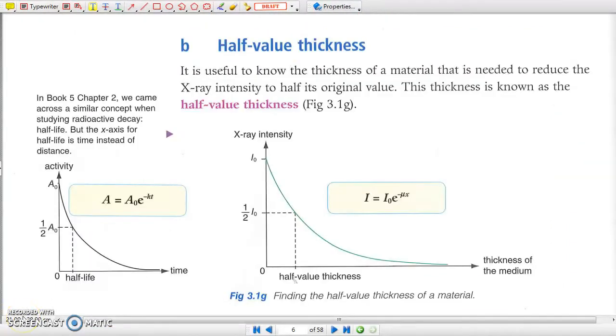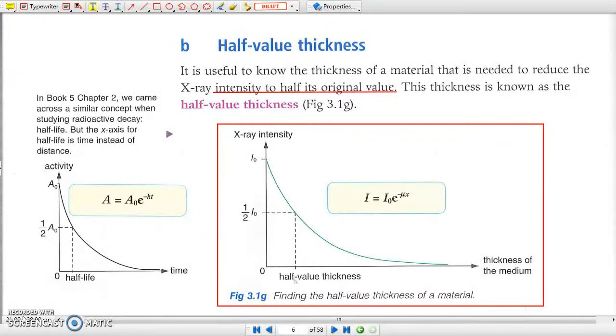b) Half-value thickness. Half-value thickness is the thickness that halves the intensity of X-rays. The concept is quite similar to the half-life in radioactivity, which is the time taken to halve the radioactivity.